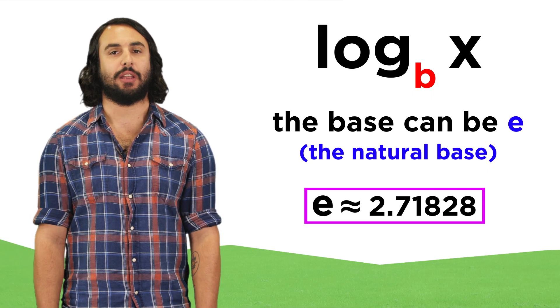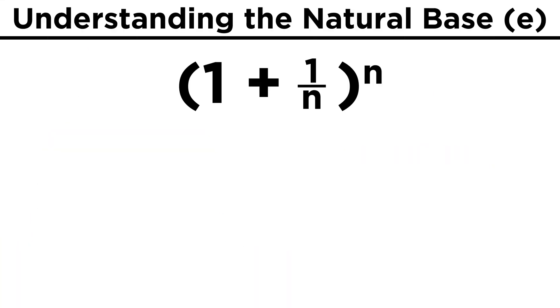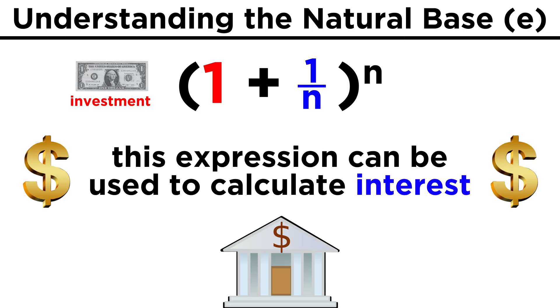But what is E exactly? If we look at the expression (1 + 1/n)^n, this was originally derived to calculate interest.